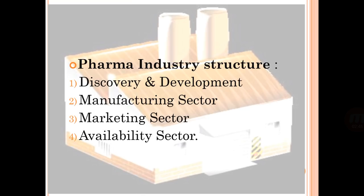The structure of the pharma industry contains four main sectors: discovery and development, manufacturing, marketing, and availability.